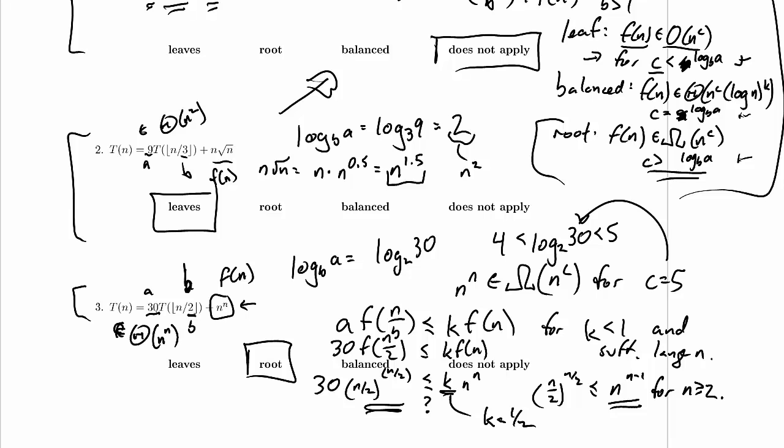So it doesn't matter that we've got 30 sub-problems, each half is large. We are spending a huge amount of work at the root, and that turns out to dominate the work in the rest of the tree. Now, in general, it's not necessarily the case that the root is little omega of the work in the rest of the tree, but in the root case, the work at the root is at least as large as omega of the work in the rest of the tree, and in that case, when we add them together, we end up with just the work at the root asymptotically.